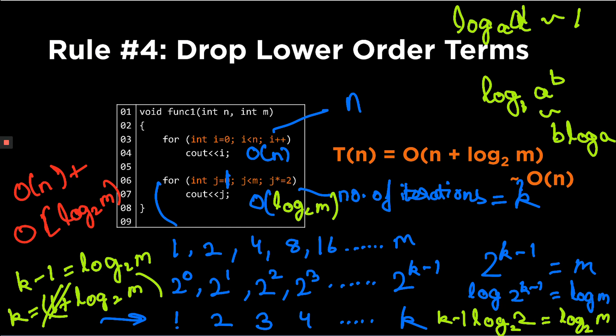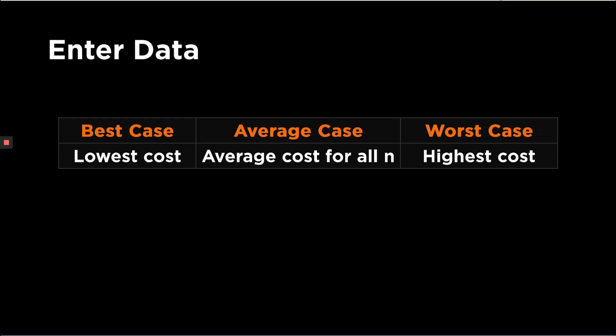This can be further simplified to O(n), because logarithms grow much more slowly than linear functions. So if you have a complex program with multiple Big O representations of different code snippets, you can drop all lower order terms. This was the fourth rule. You will need to use all these rules together in your program analysis throughout the course, and we will do more problems in Monday's problem-solving lecture.